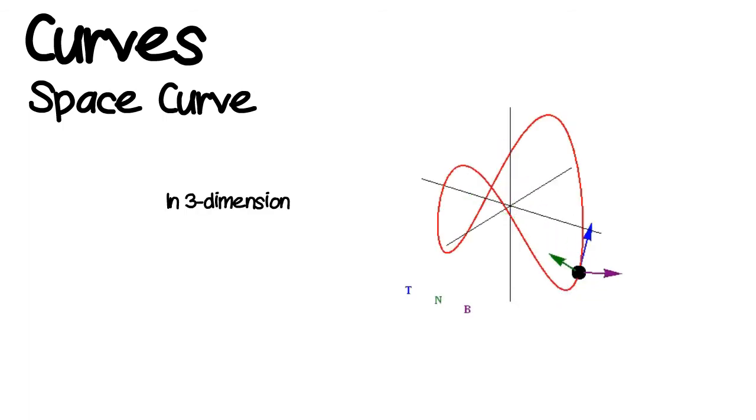A space curve is similar but also shows how the point moves backwards and forwards in space. So in other words, it shows us how the point moves in three dimensions.